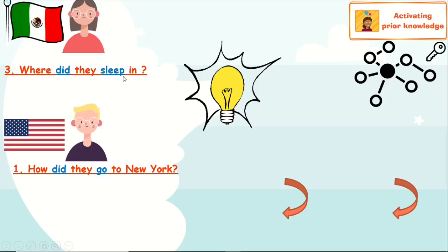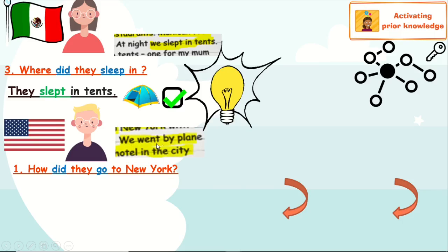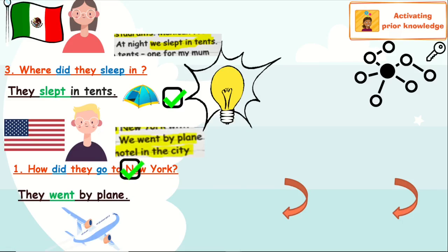Where did they sleep? Let's refer to the text to have evidence. 'We slept in tents.' So the answer is: they slept in tents. Now we're asking about Beto. How did they go to New York? Let's try to describe his holiday.